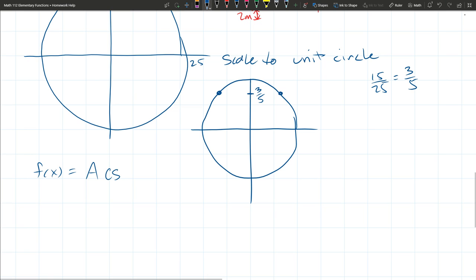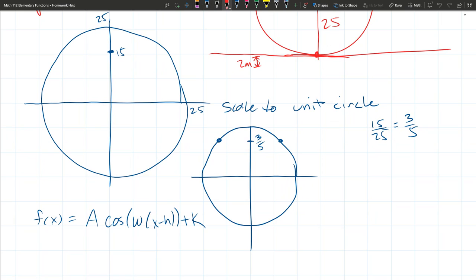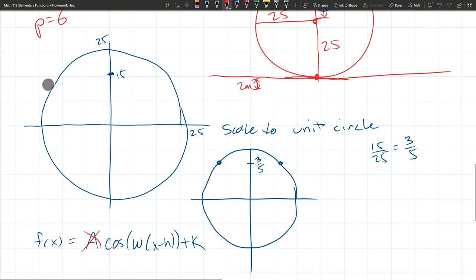Alright, we have eliminated quite a few of these, so let's cross out. I scaled this to a unit circle, so A is going to be one. I also shifted it down so that we're centered at the origin, which means k would be zero.